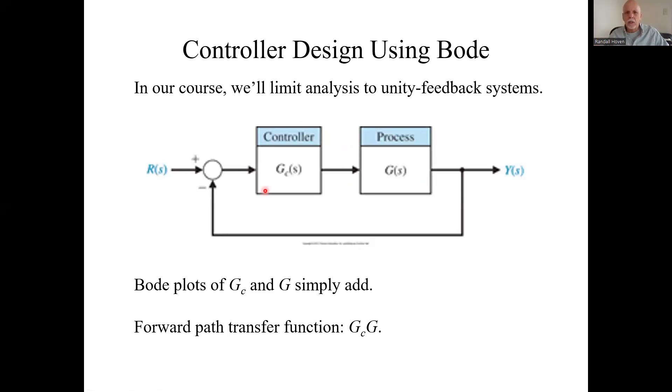The process or the plant is given. What we control is the form of this controller and its parameters. If we put this controller in here, the whole forward path transfer function is the product of these two. So this product becomes the new forward path transfer function. And this, in effect,